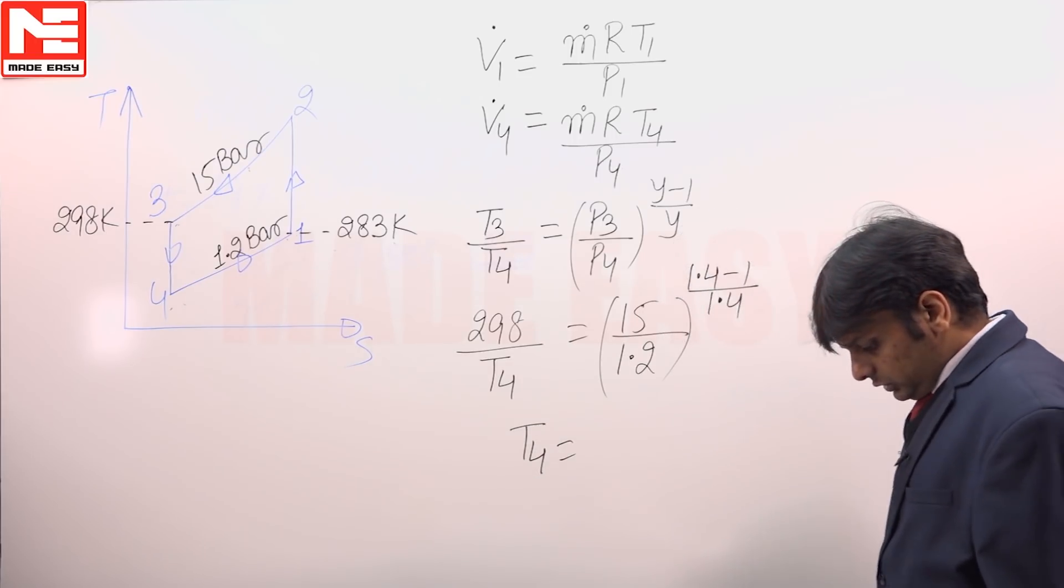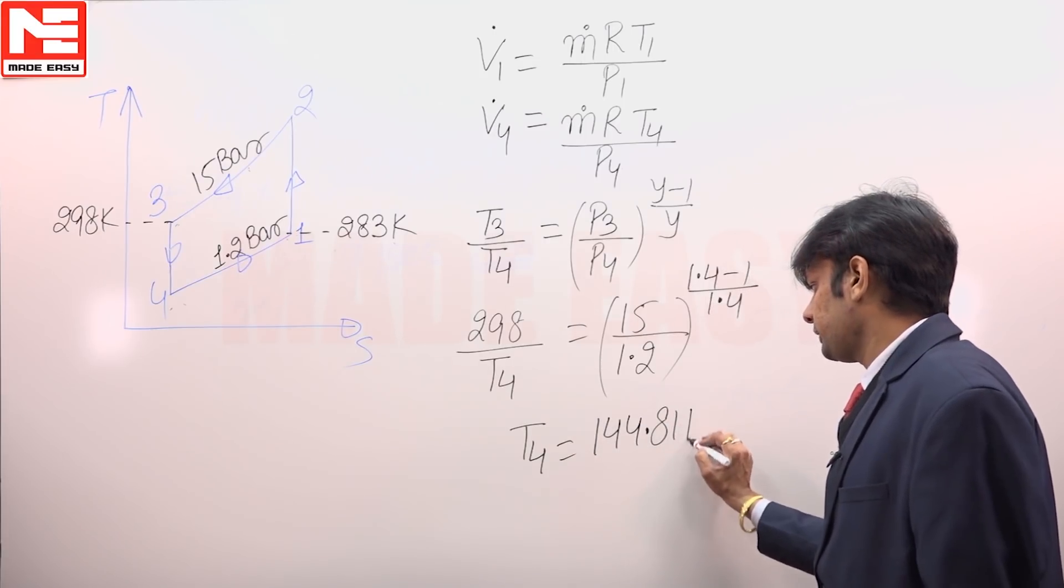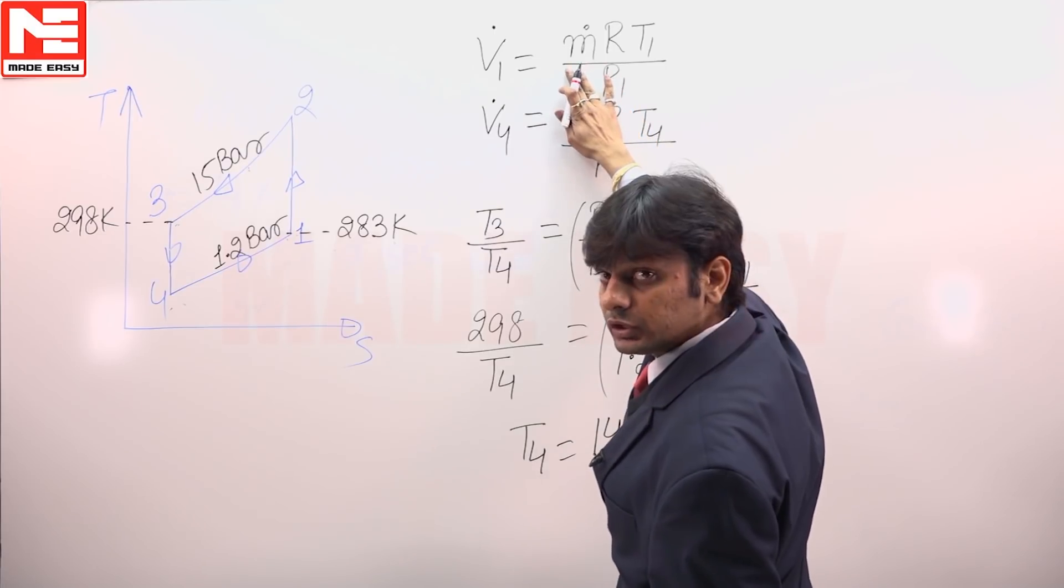Therefore, the value of T4 is 144.81 Kelvin. Now the only unknown is mass flow rate.